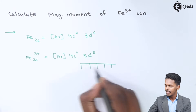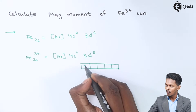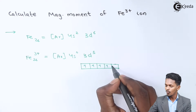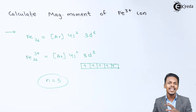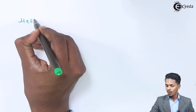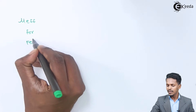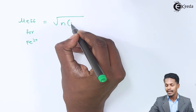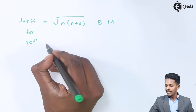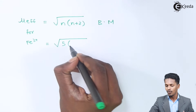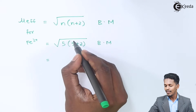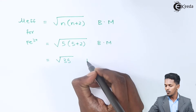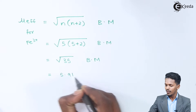The d orbital consists of 5 electrons, and this d subshell has 5 unpaired electrons — 1, 2, 3, 4, 5. So n, the number of unpaired electrons, is found to be 5. Based on that we can calculate the effective magnetic moment for Fe³⁺: μ_eff = √(n(n+2)) Bohr magnetons = √(5×7) = √35 Bohr magnetons, which equals 5.91 Bohr magnetons.